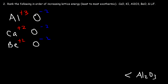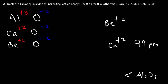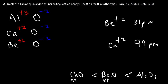Since calcium and beryllium have the same charge, we need to see which ion is smaller. Beryllium is above calcium on the periodic table. The ionic radius of calcium is 99 picometers and beryllium is 31 picometers, so calcium is significantly larger than beryllium. Therefore, beryllium oxide should have a more exothermic lattice energy than calcium oxide because beryllium is a lot smaller.